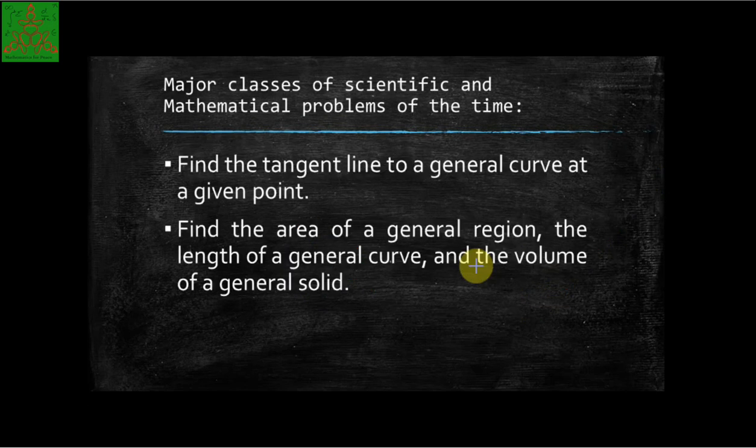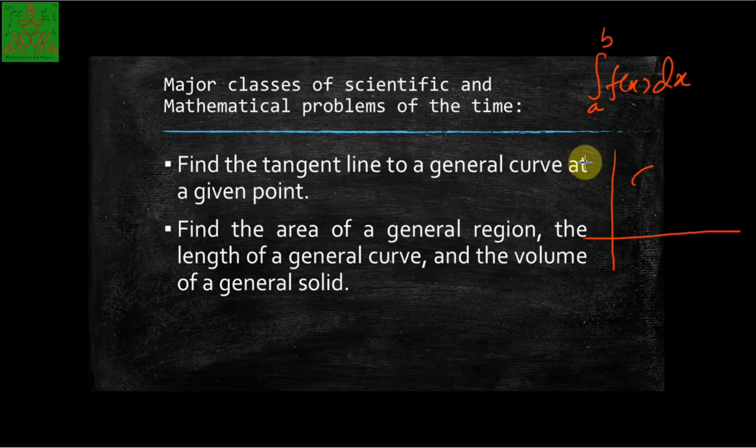Finding the area of the general region, the length of the general curve, and the volume of the general solid. In particular, I can say finding the area of uneven sections. As you are discussing in your calculus, finding the area between this or integration of a to b f(x) dx. That means it is finding the area under that curve. Using this integration, we can also be able to find out the length of the curve and the volume of a general solid.